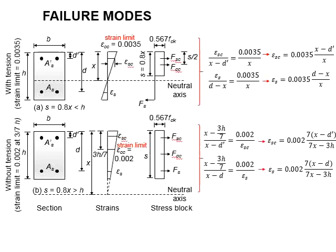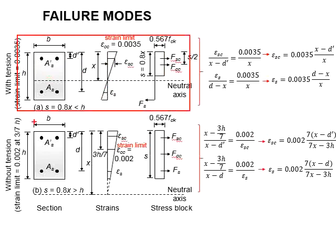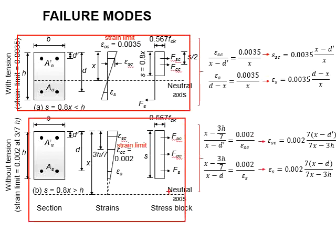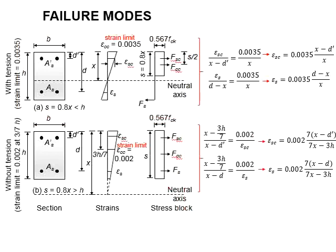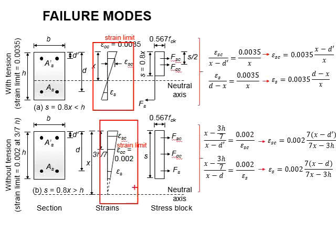This slide demonstrates the process for determining the compression strength and tension strength of the steel in the concrete for both types of column sections. It is basically obtained from the interpolations of the strength profile of the columns.